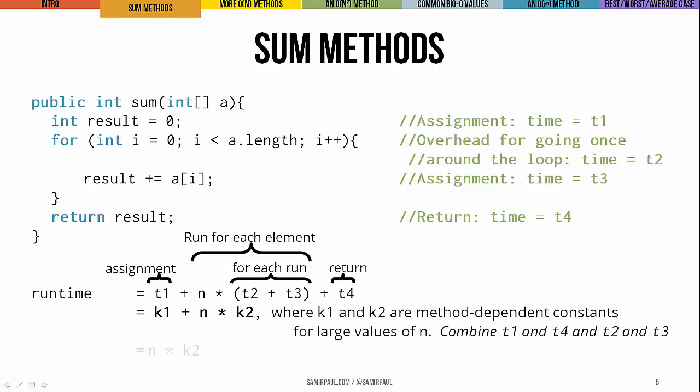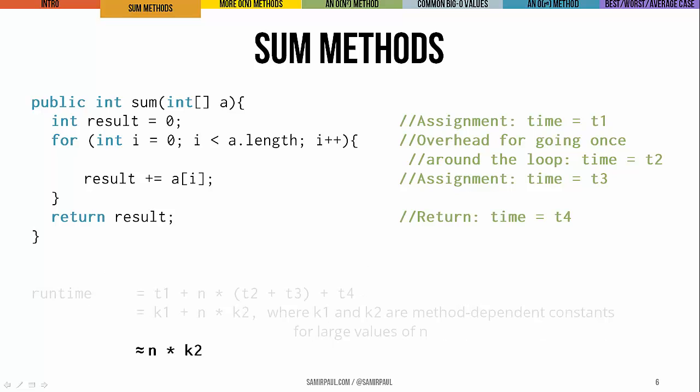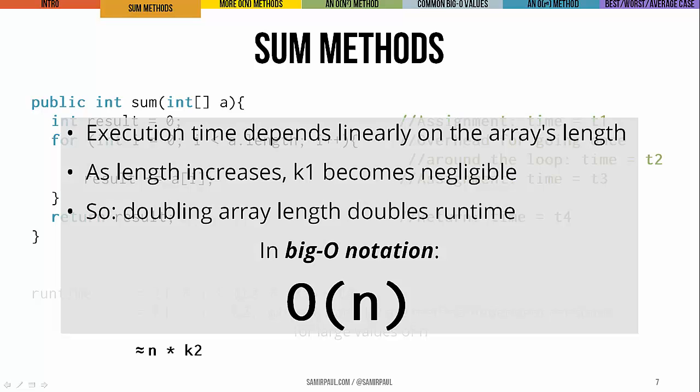We could combine T1 and T4 into some constant K1, and combine T2 and T3 into a constant K2. As n — the size of our array — gets really big, the constant term K1 becomes pretty negligible. So all we're left with is n times K2 as our expression of the runtime. This tells us the runtime is linearly dependent on the length of the array. So doubling the length doubles the runtime, and tripling it triples the runtime. Computer scientists express this linear relationship using big O notation: we say this method is big O of n, meaning its runtime is on the order of n.